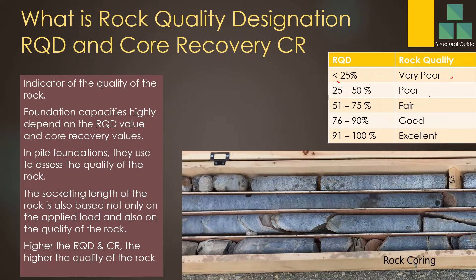Higher the RQD and Core Recovery values, higher the quality of the rock. As shown in the table, based on the RQD value — the Rock Quality Designation — the quality of the rock is classified: less than 25 is very poor, 25 to 50 is poor, above 50 is fair, good, or excellent. When you design a pile foundation, it is better to have the RQD above 50. If it is less, you have to be very careful and take full attention. The design shall be done based on your experience, and a well-qualified person shall decide the ground capacities.